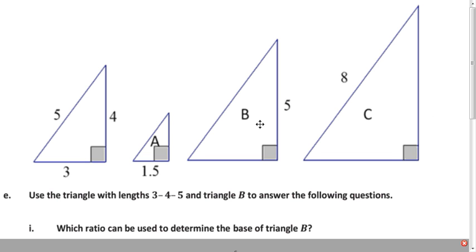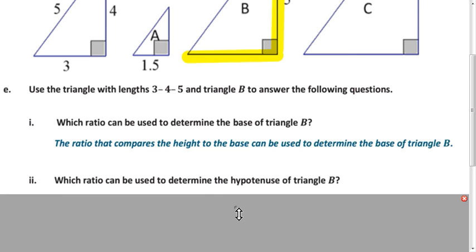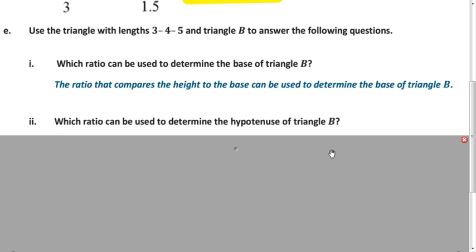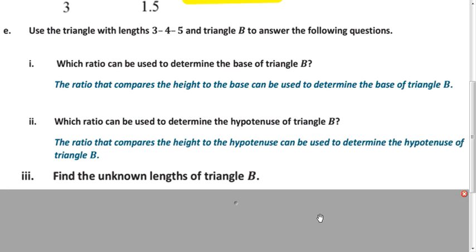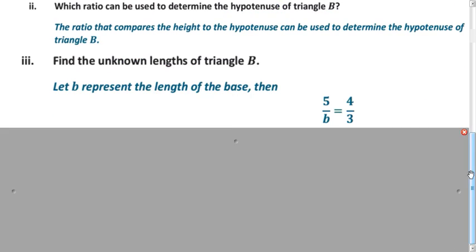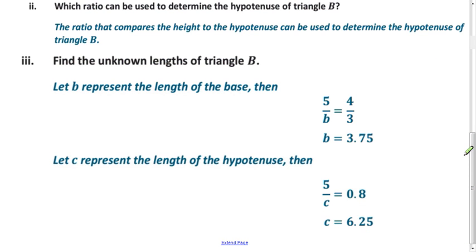Similar idea, but now we're talking about triangle B. Which ratio would you use to figure out the base of the triangle? We already know the height and we're looking for the base, so we want the ratio that compares the height to the base. What if you're looking for the hypotenuse? We already know the height, so we want the ratio that compares the height to the hypotenuse. Using the cross product and dividing by 4 gives 3.75, and similarly for the hypotenuse, using the decimal gives 6.25.